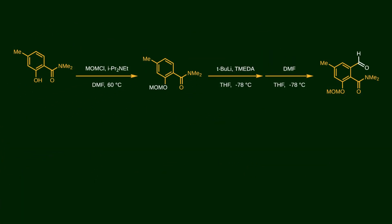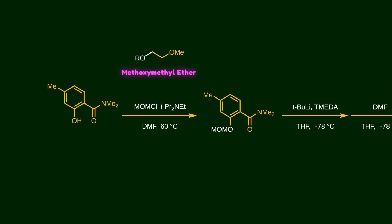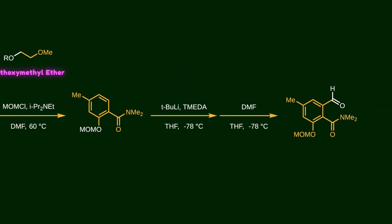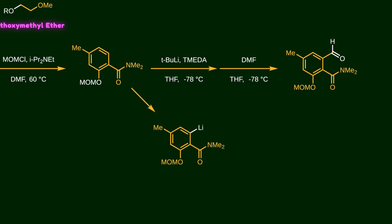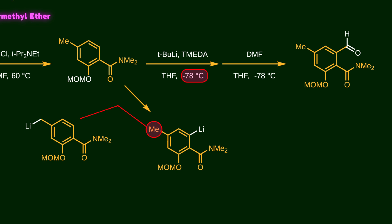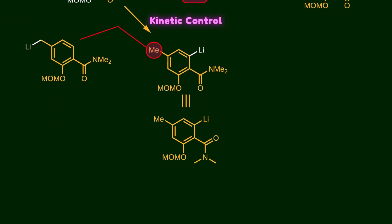Next, the remaining hydroxyl group is protected by MOM. After protection, a formaldehyde unit is installed at the ortho position of the amide. Treatment with n-butyllithium results in ortholithiation. Notice that the methyl group parallel to the amide is also capable of lithiation, but since the reaction is carried out at minus 78 degrees, ortholithiation is preferred — this reaction is under kinetic control. At the ortho position, the lithium can coordinate to the oxygen of the carbonyl group, so the ortholithiation pathway has a lower energy barrier compared to lithiation at the methyl group, which explains the ortho selectivity.